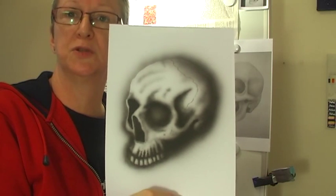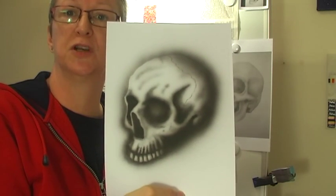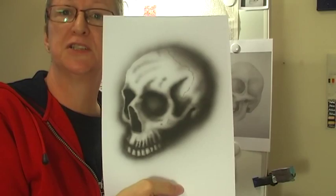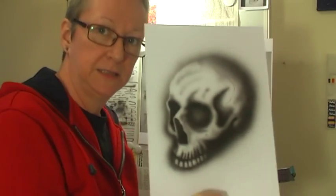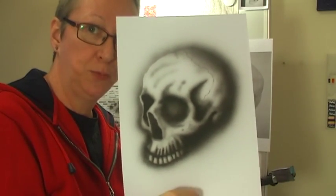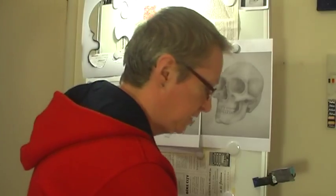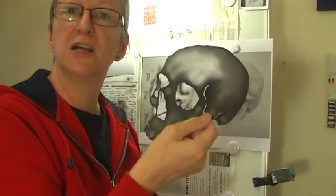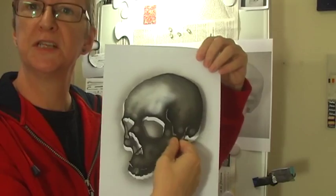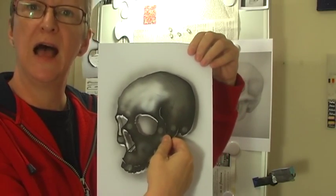My old airbrush, which was the Harder and Steinbeck Ultra. This one has no lower jaw, and I watched a video on YouTube before I did this. I then cut out the stencil, put the stencil on here and brushed...